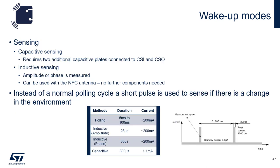Capacitive sensing only requires two additional capacitive plates connected to CSO and CSI pins of the device — generally just traces laid out on the board. For inductive sensing, the antenna is used to detect changes in the field. The power savings of the wake-up modes is due to the short pulse used to sense if there's a change in the environment, compared to the normal polling cycle. In a normal polling cycle, the duration is anywhere from 5 to 100 milliseconds and draws about 200 milliamps. However, for inductive amplitude and phase, that duration is cut down to 25 to 35 microseconds, which results in significant power savings. For capacitive sensing, the power savings comes from the fact that the field does not have to be turned on to look for a change.